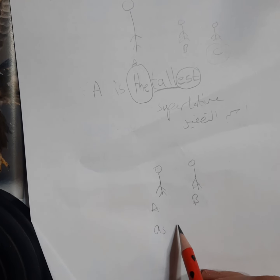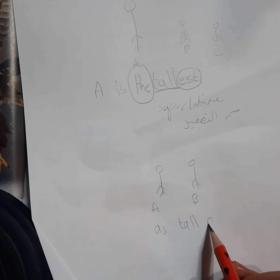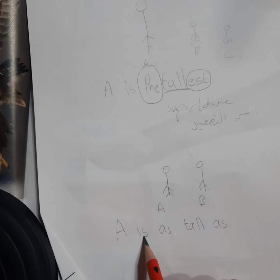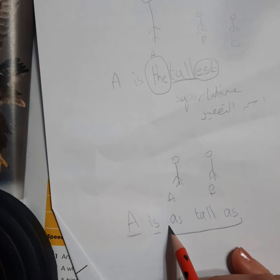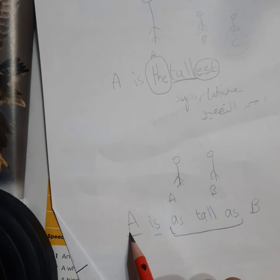في عندي تركيب اسمه as بعدين بحط الadjective اللي بدي إياه شو ما كان يكون ومنحط as. يعني بقول إنه A is as tall as B. So A is as tall as B, is as short as B.